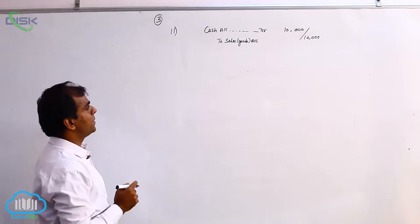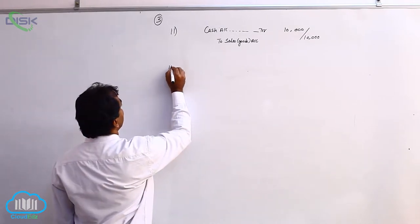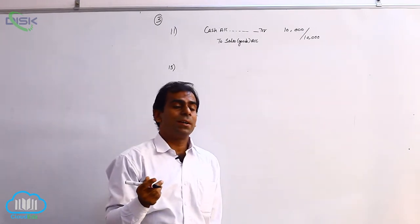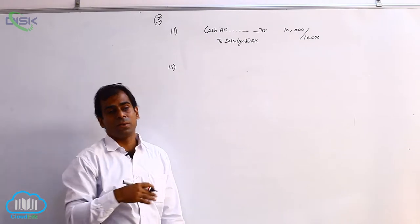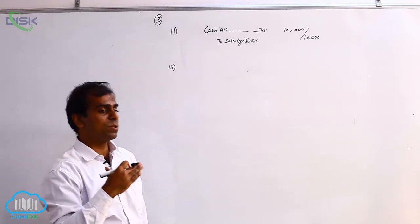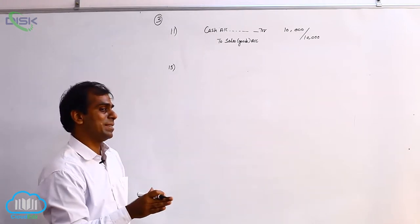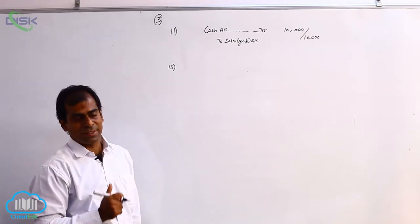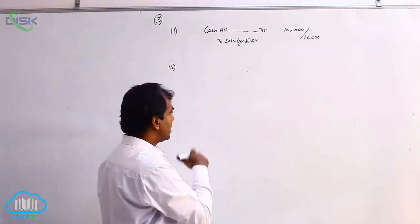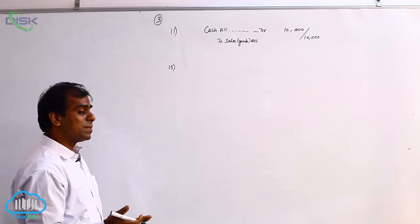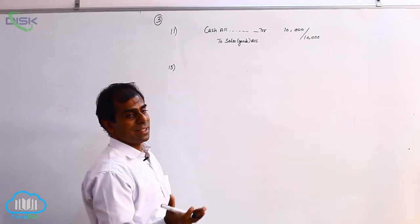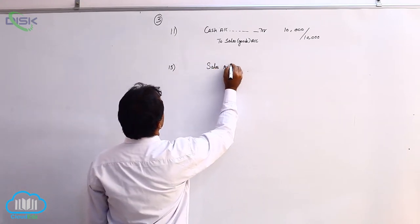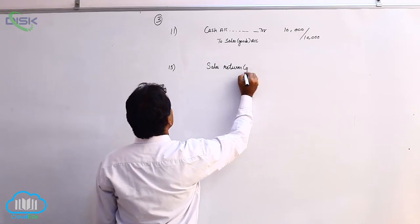The next transaction is on 15th: Mahesh returned goods. Previously we had sold goods to Mahesh, so it was a credit transaction. Now some goods he is returning back, whatever may be the reason. So we are getting back the goods. Goods sold previously are returning, so this becomes sales returns.